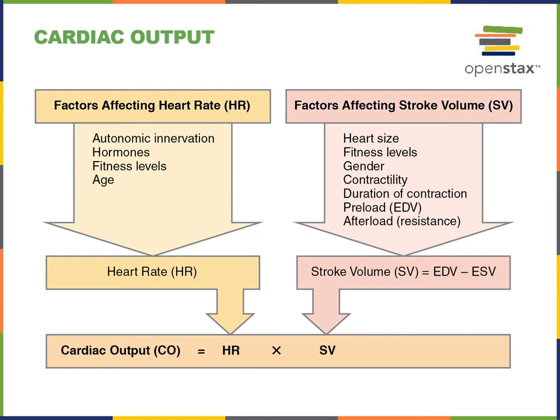A number of factors can influence both heart rate and stroke volume and then lead to an influence on cardiac output. For example, the autonomic nervous system provides extrinsic control over heart rate as well as stroke volume. There are also hormones such as epinephrine that have an influence on cardiac output.